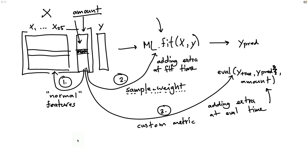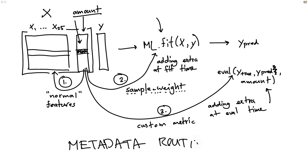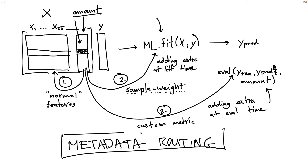Phrased differently, we have some metadata, and we are interested in routing that somewhat differently. So the feature that I'm going to be talking about is called metadata routing. Let's look at some code.